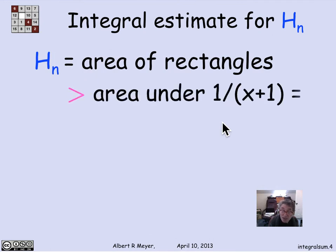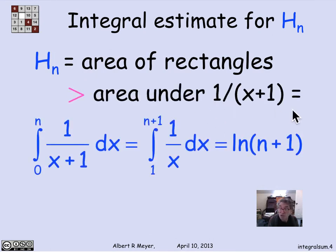So H_n equals the area of the rectangles. It's greater than the area under 1 over x plus 1, which is equal to the integral from 0 to n of 1 over x plus 1, which shifting variables is the same as the integral from 1 to n plus 1 of 1 over x dx, which is the natural logarithm of n plus 1.